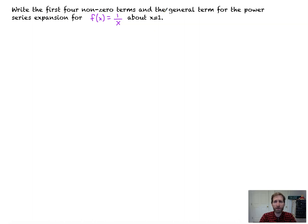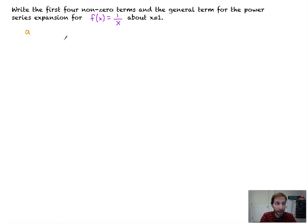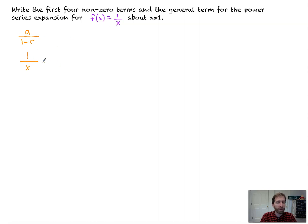Write the first four non-zero terms and the general term for the power series expansion for 1/x about x equal to 1. If we're going to do this, we could technically do it with a Taylor polynomial — that's allowed. I'm just showing you an alternative means of doing this. Taylor works here really well, actually. So we've got a over 1 minus r is what we want this to be built to. How do we go from 1/x to that? This is where things get really funky.